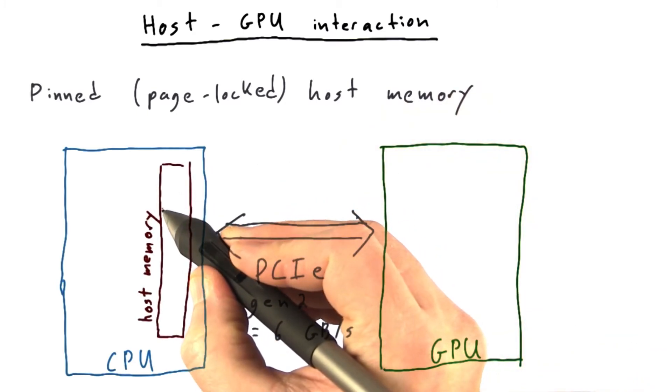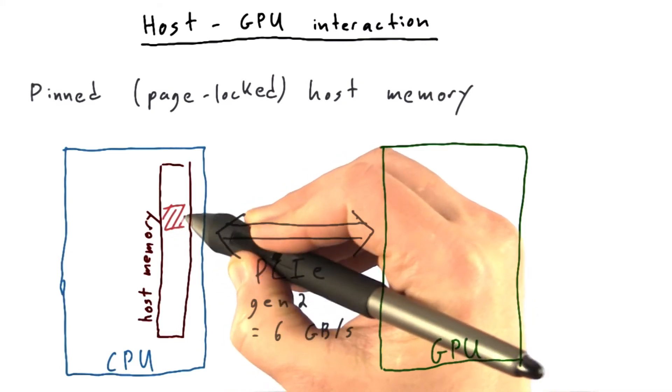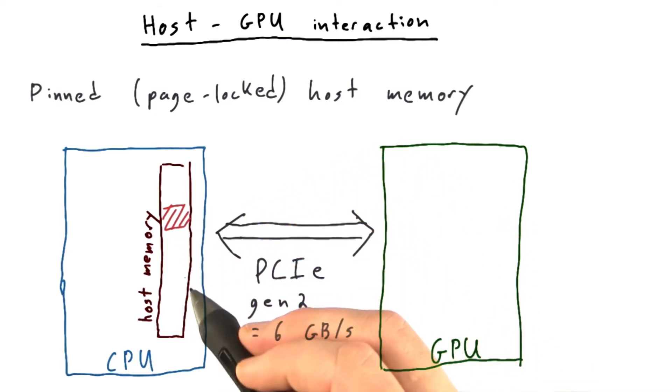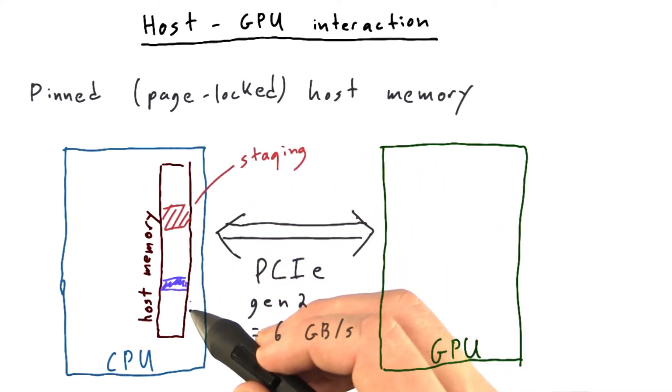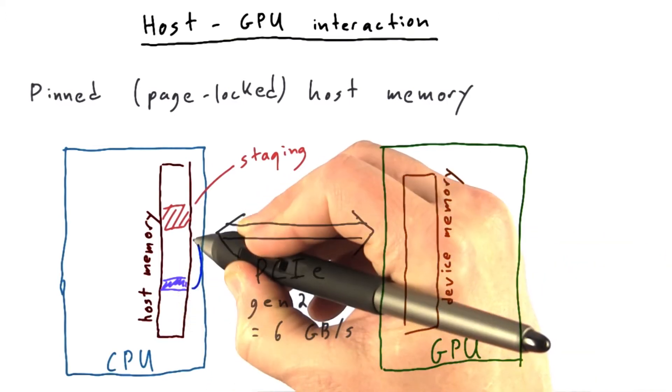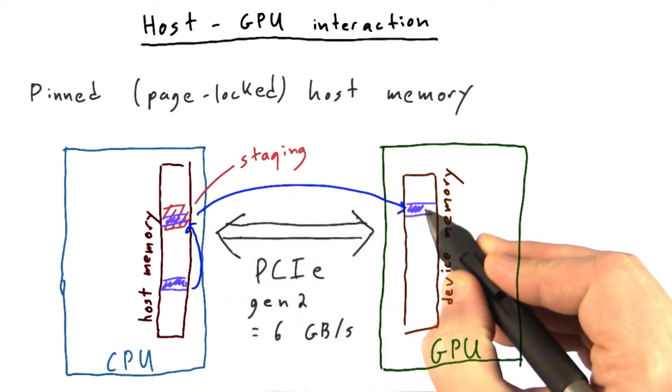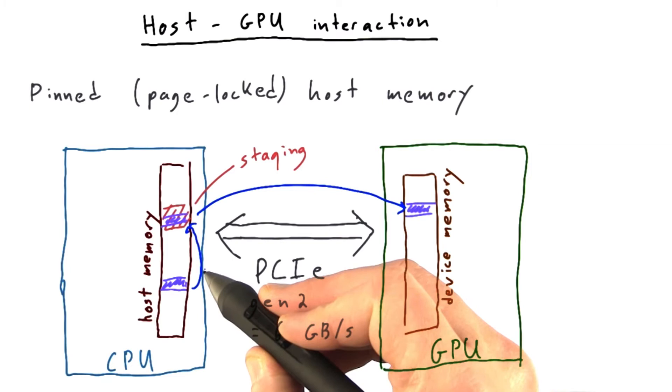PCI can transfer memory that has been page-locked or pinned, and it keeps a special chunk of pinned host memory set aside for this purpose. When you have a chunk of memory that you want to copy over to the device memory on the GPU, CUDA first has to copy it into the staging area before it can then transfer it over the PCI Express bus onto the GPU. This extra copy increases the total time taken by the memory transfer.